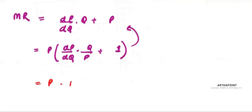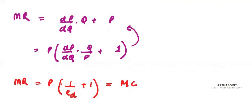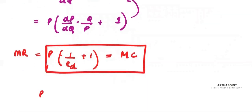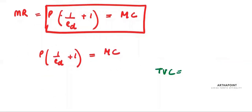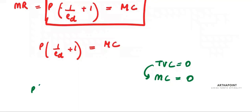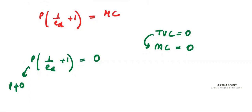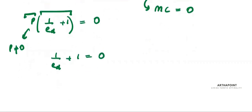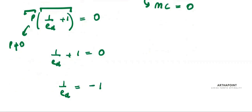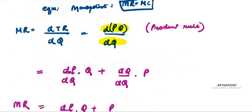We know that dP/dQ times Q/P is one over elasticity of demand, so MR equals one over Ed plus one. At equilibrium, MR equals MC, giving us P times (one over Ed plus one) equals MC. Since variable cost is zero, MC is zero. Price cannot be zero, so one over Ed plus one equals zero, which gives one over Ed equals minus one, so Ed equals minus one.